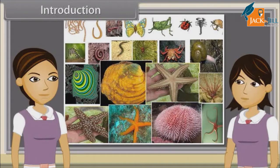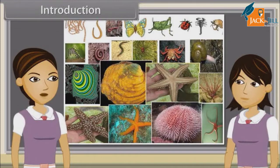Now we are going to discuss characteristics of Hemichordates, Chordates, Vertebrates, Cyclostomata, Chondrichthyes, Osteichthyes, Amphibians, Reptilia, Aves and Mammalia.